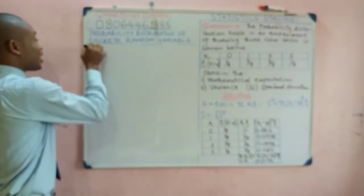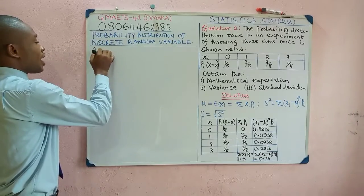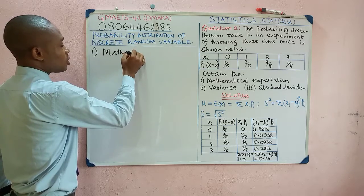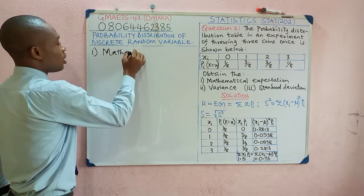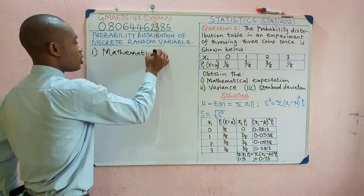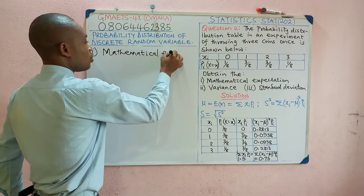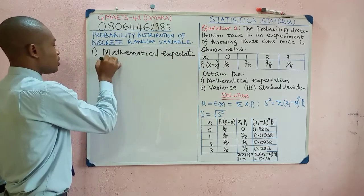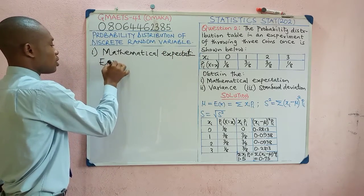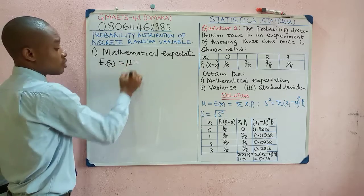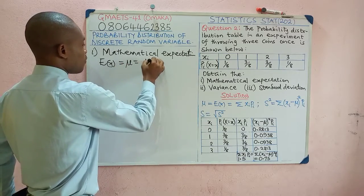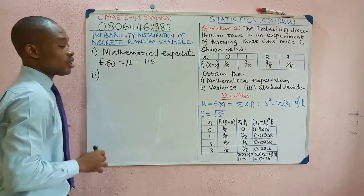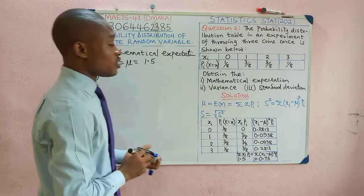Therefore, the mathematical expectation — E(x) or μ — gives us 1.5. This moves us to the next part of the question, which is the variance.